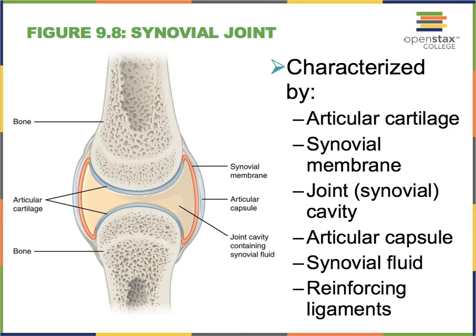We have to have a synovial cavity. This right here is our synovial cavity, or the joint cavity, filled with a fluid we call synovial fluid. You're already familiar with the articular cartilage. Even though we considered the articular cartilage part of our bone organ, it is also considered to be part of our joint.